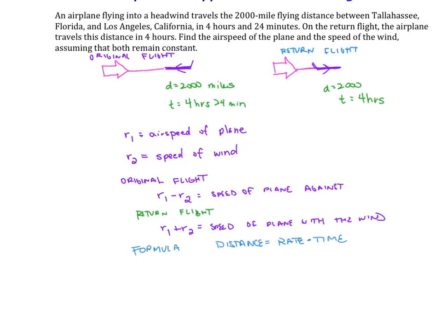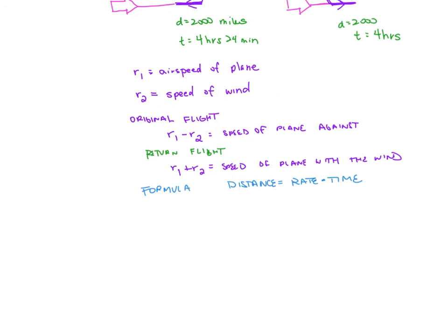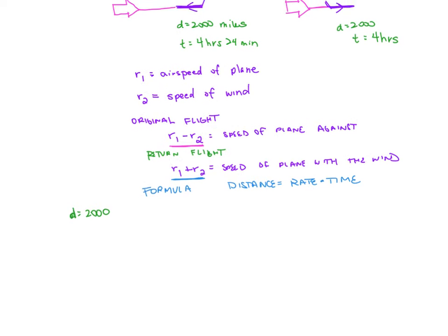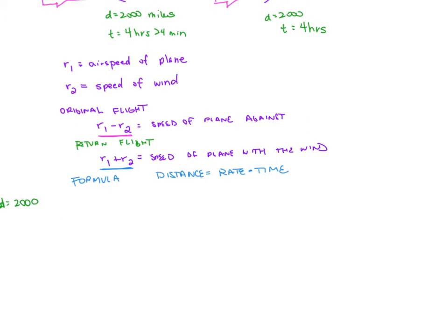Those are our rates. The formula we're going to use is distance equals rate times time. From the word problem, the distance is 2,000 miles each way. Our first rate is R1 minus R2 for the original flight, and the second rate is R1 plus R2. The time of the original flight is 4 hours and 24 minutes, or 24 over 60. The return flight time is 4 hours.